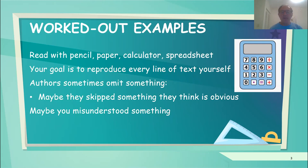With these worked out examples, again, very different than other subjects, I suggest you read them with a pencil and paper in hand, and perhaps a calculator and a spreadsheet. Your goal is to reproduce every line of these worked out examples yourself. When there's a calculation, do the calculation. In doing this, you will discover that authors sometimes will omit something, perhaps they skipped something because they think it's obvious, but it may not be so obvious to you. Also, maybe you misunderstood something. So by reproducing every line yourself, you take care of perhaps something that was overlooked or something that was misunderstood.